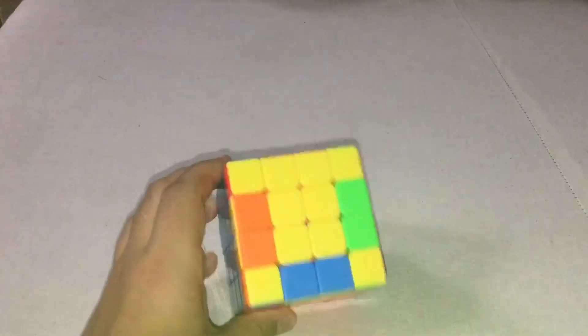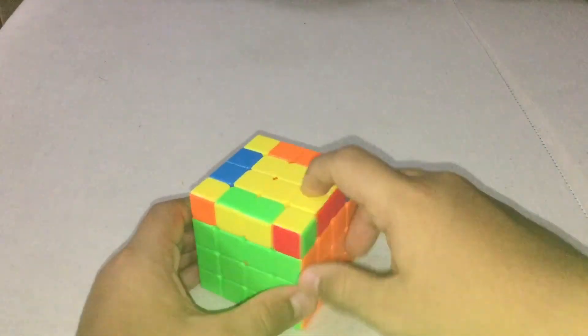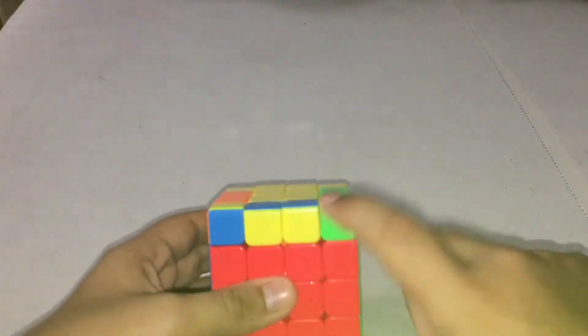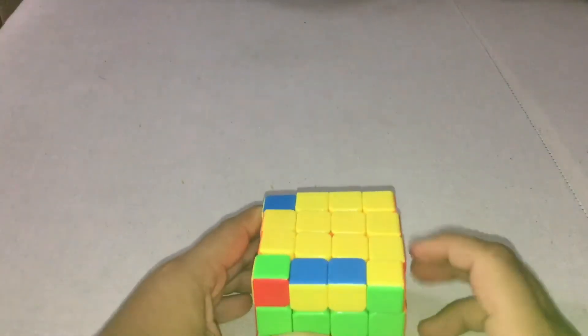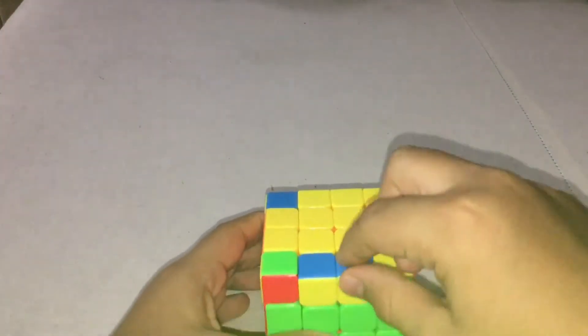Okay so the way you hold the parity cases is, if you have one edge solved then you can hold it anywhere except for that one place where the edge is solved. So you can hold it where the edges are flipped - you can hold it here, here, or here.